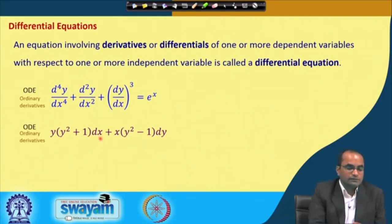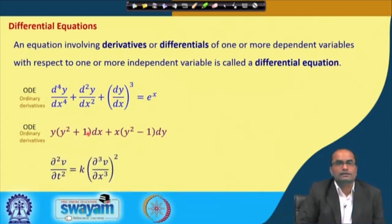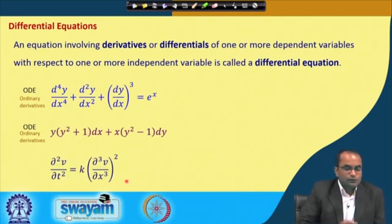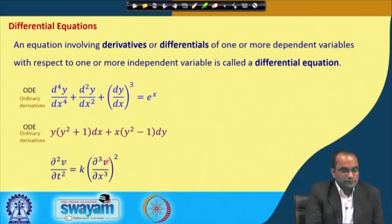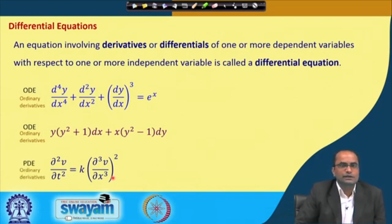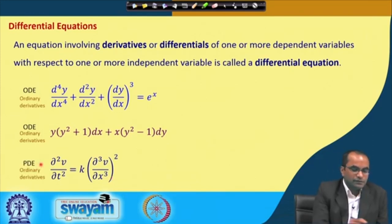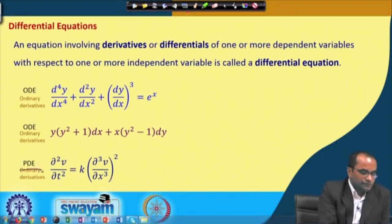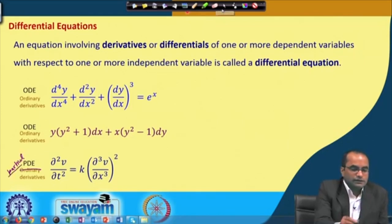We have only one dependent variable y and one independent variable x. For instance, in another case we have two independent variables x and t, and v depends on both x and t. Here we have partial derivatives in the equation, and therefore this is called a partial differential equation or PDE, because we have partial derivatives rather than ordinary derivatives.